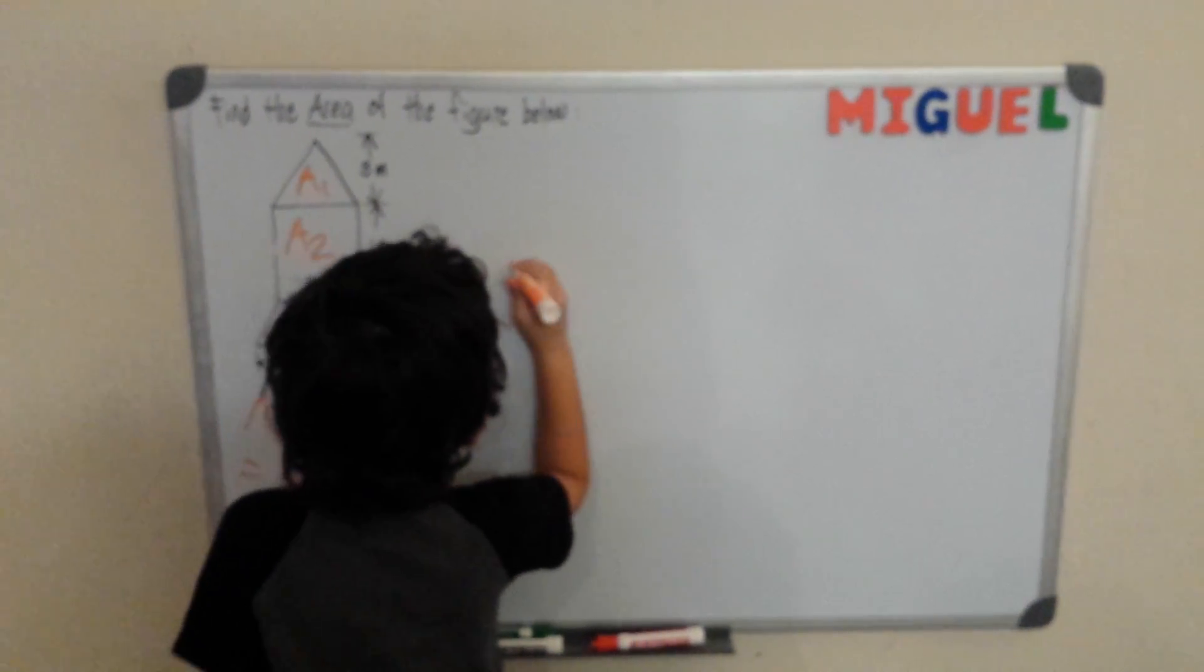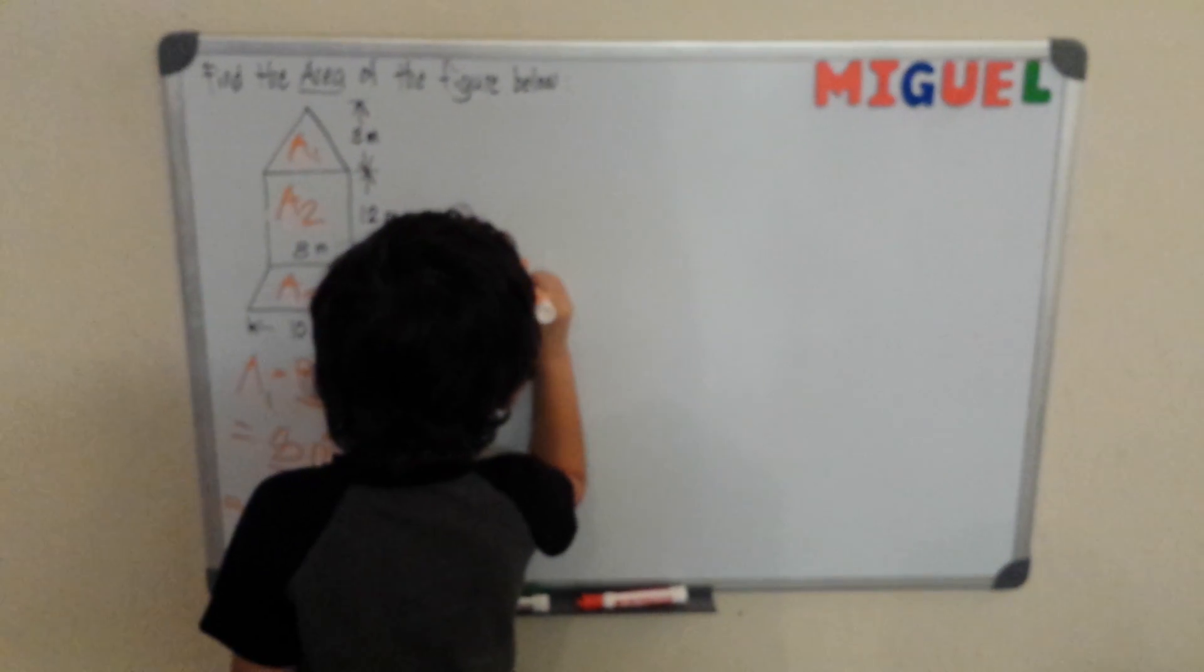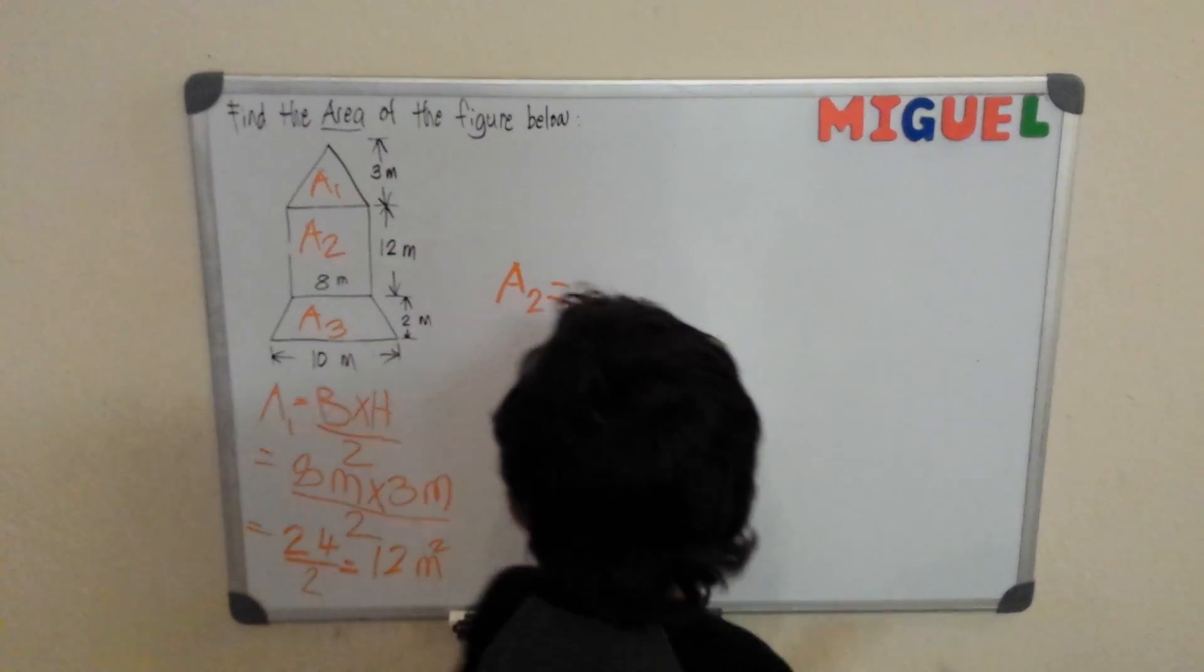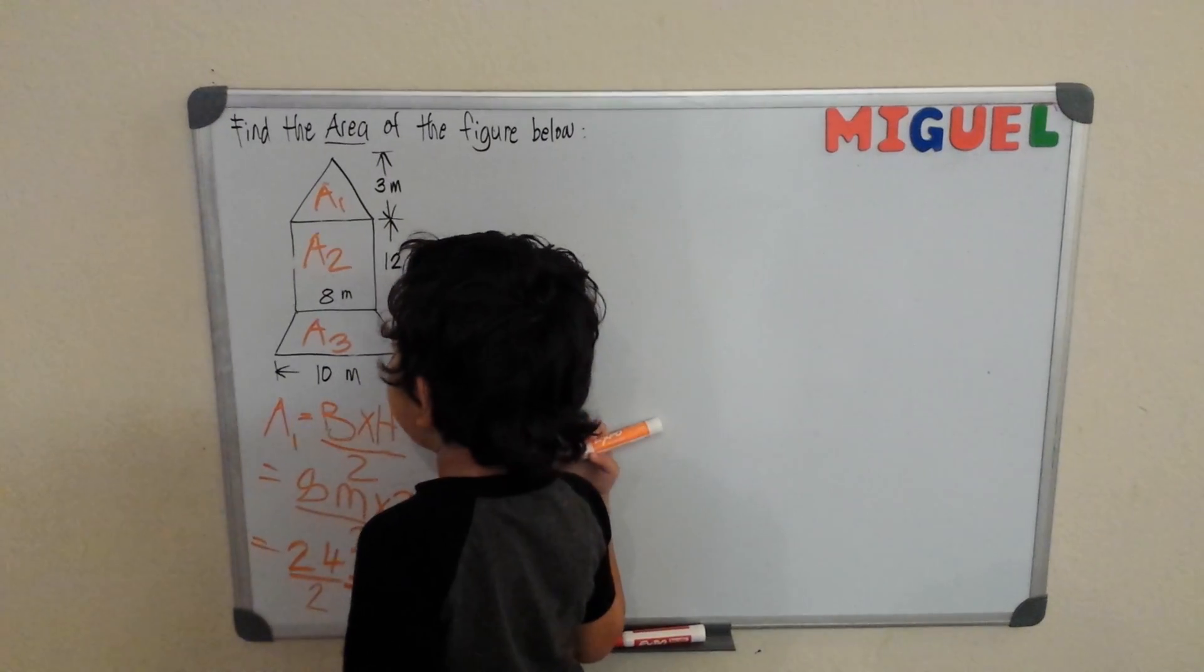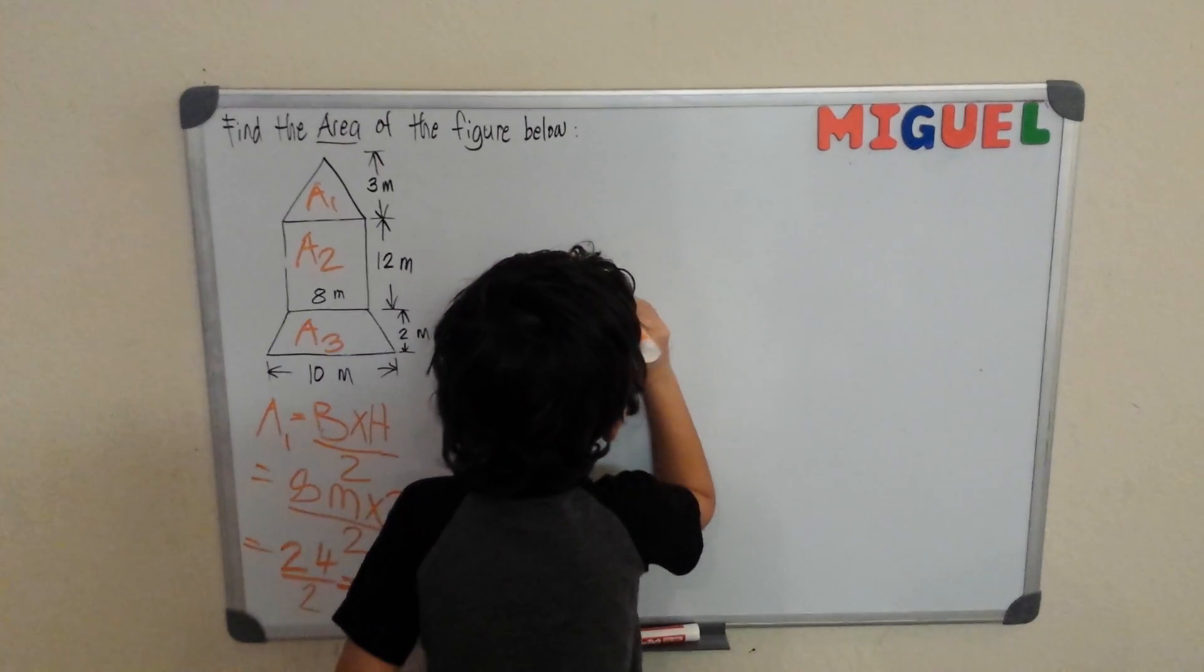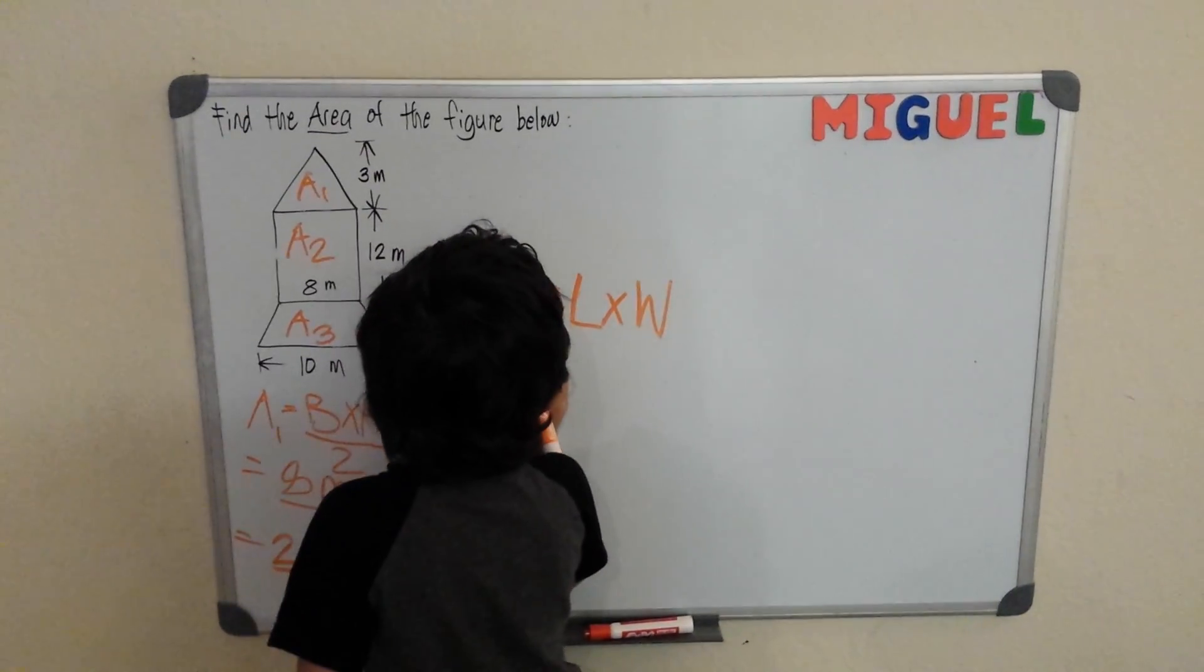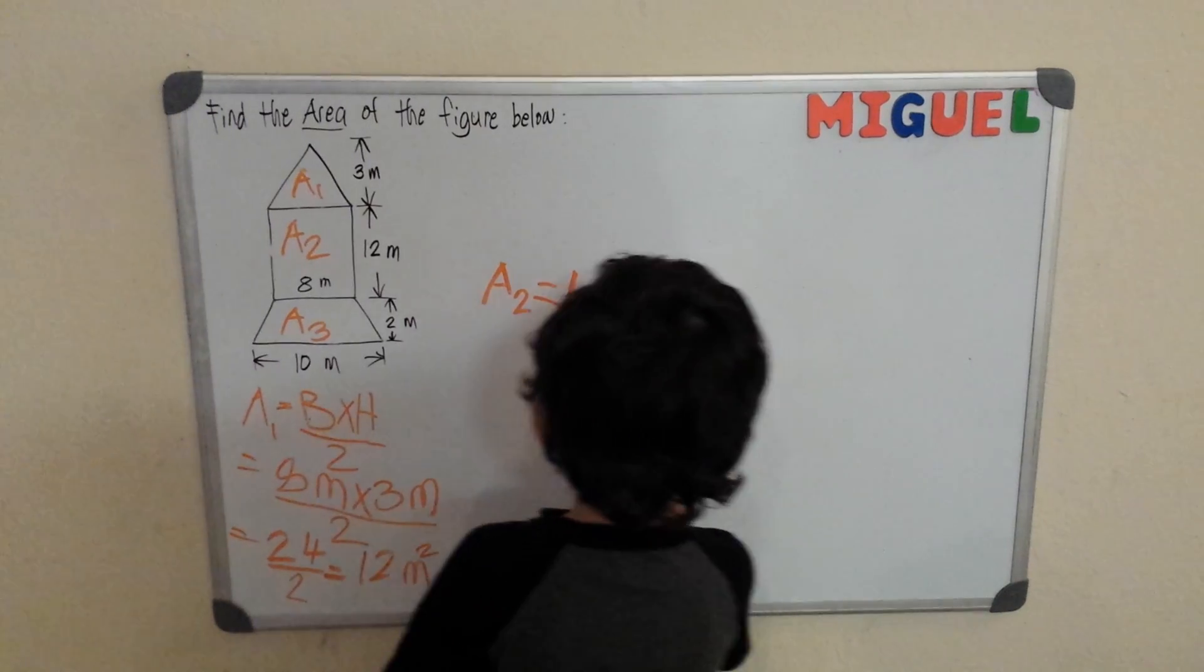Okay, so the next one is our area 2. Our area 2 is equal to, what's our area 2? Is that length times width? I think that's it.